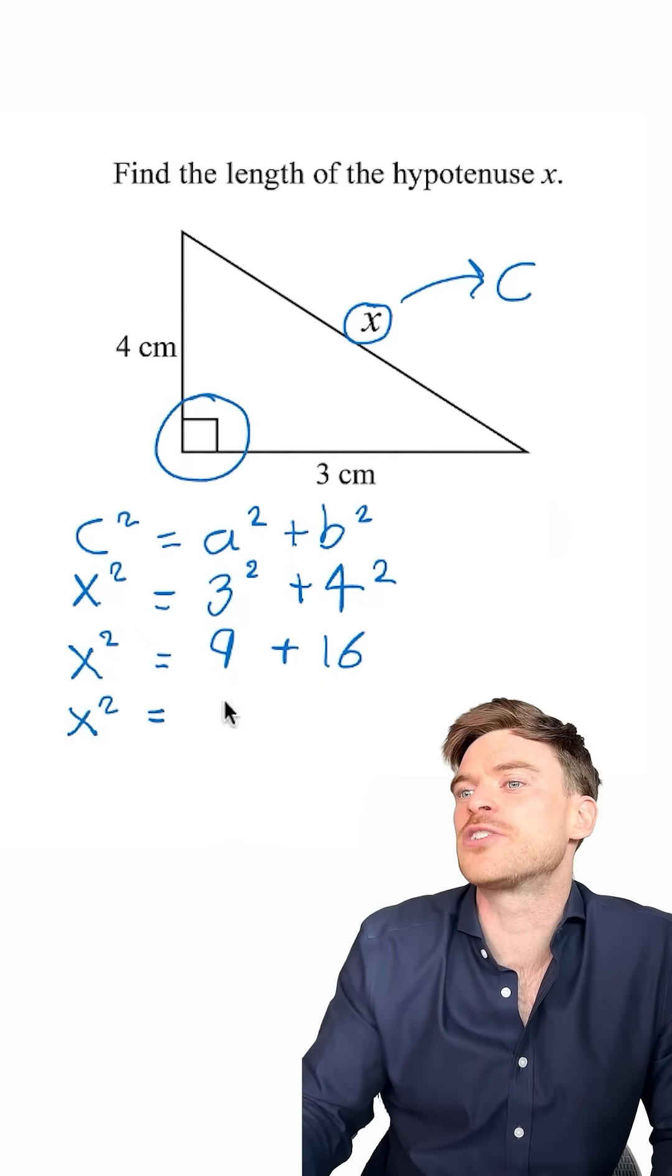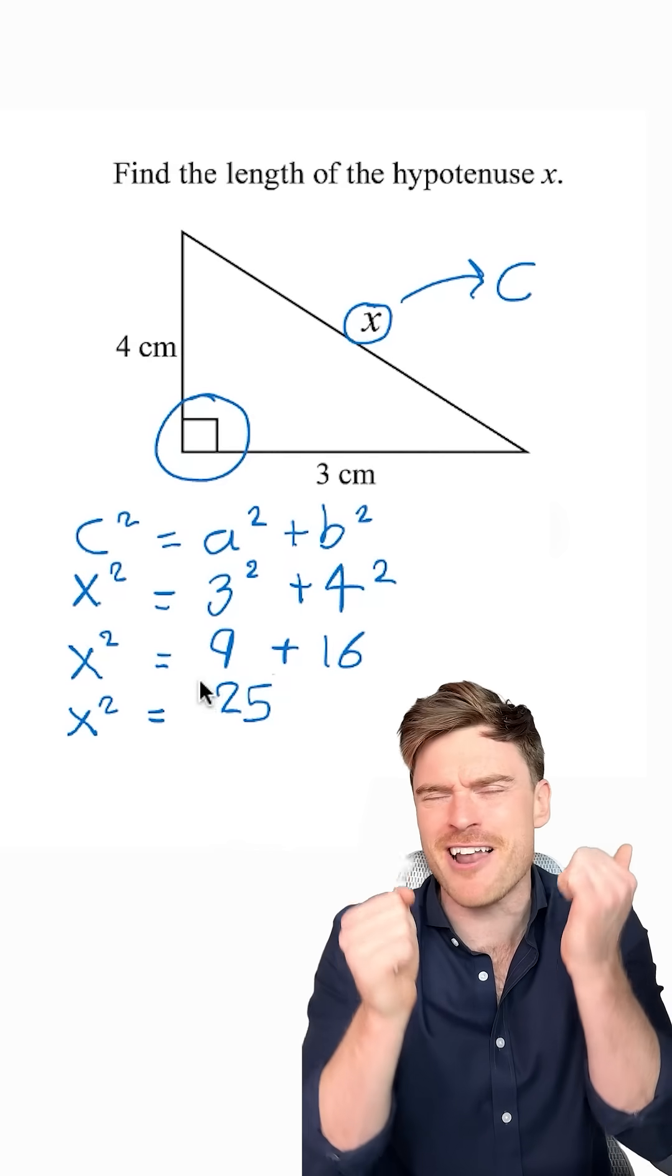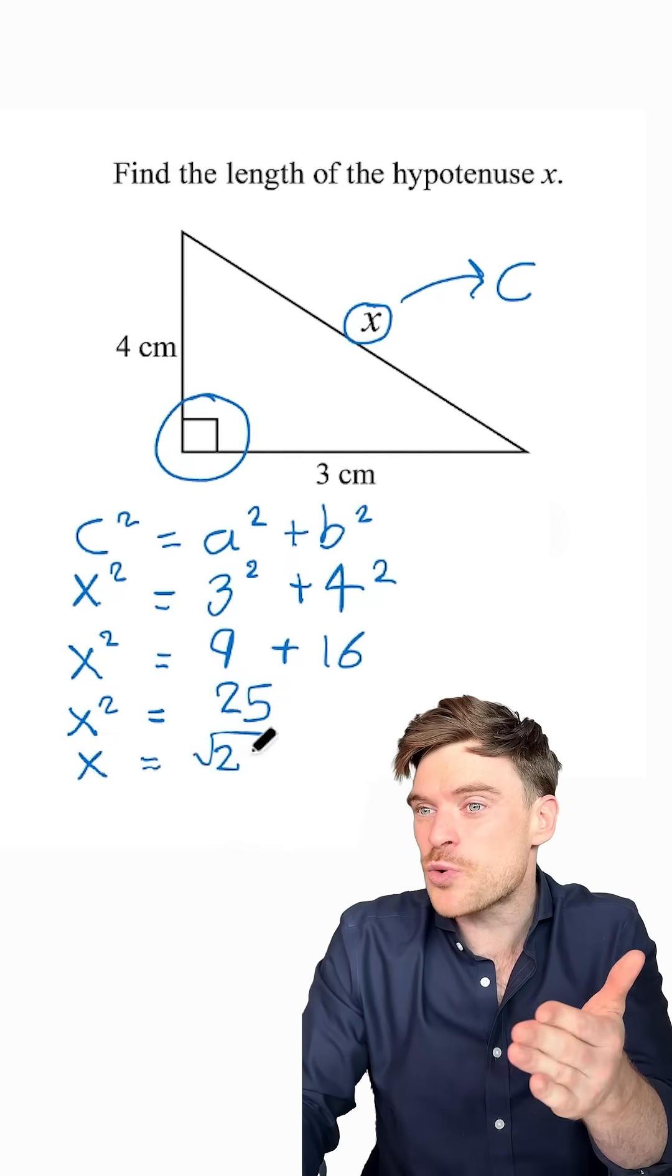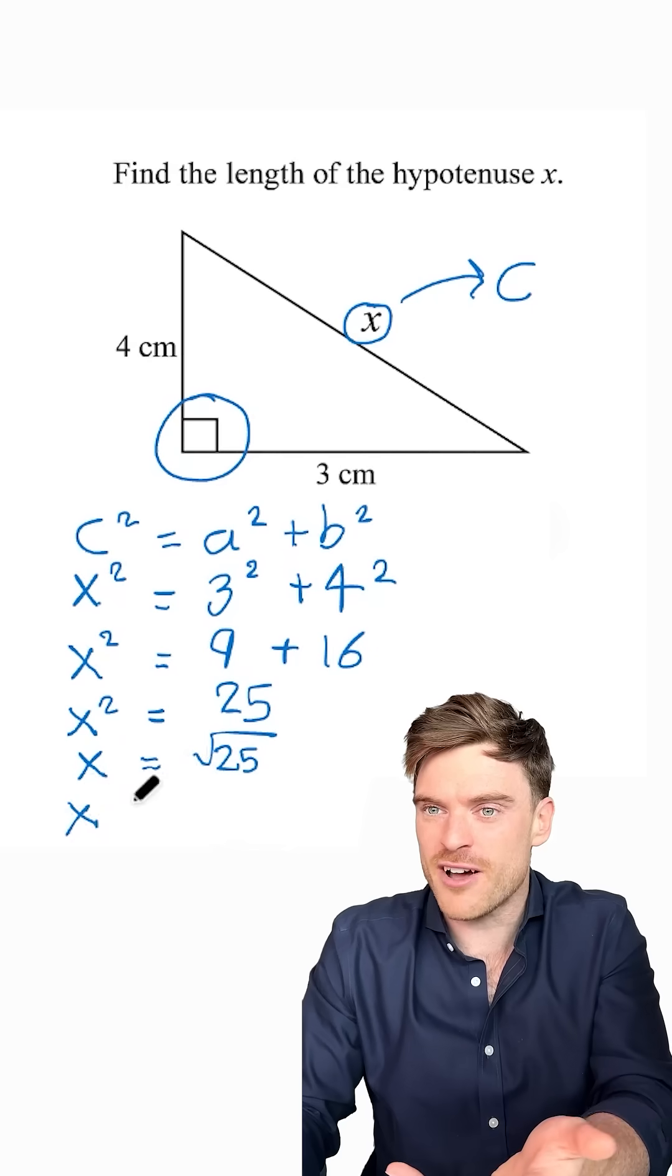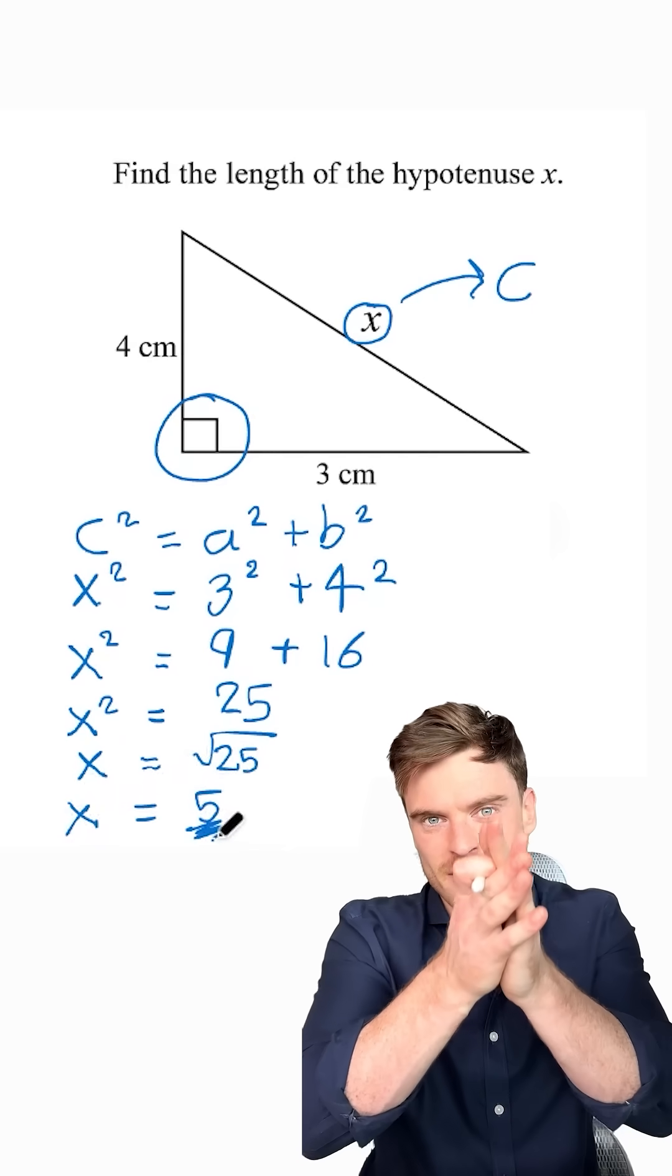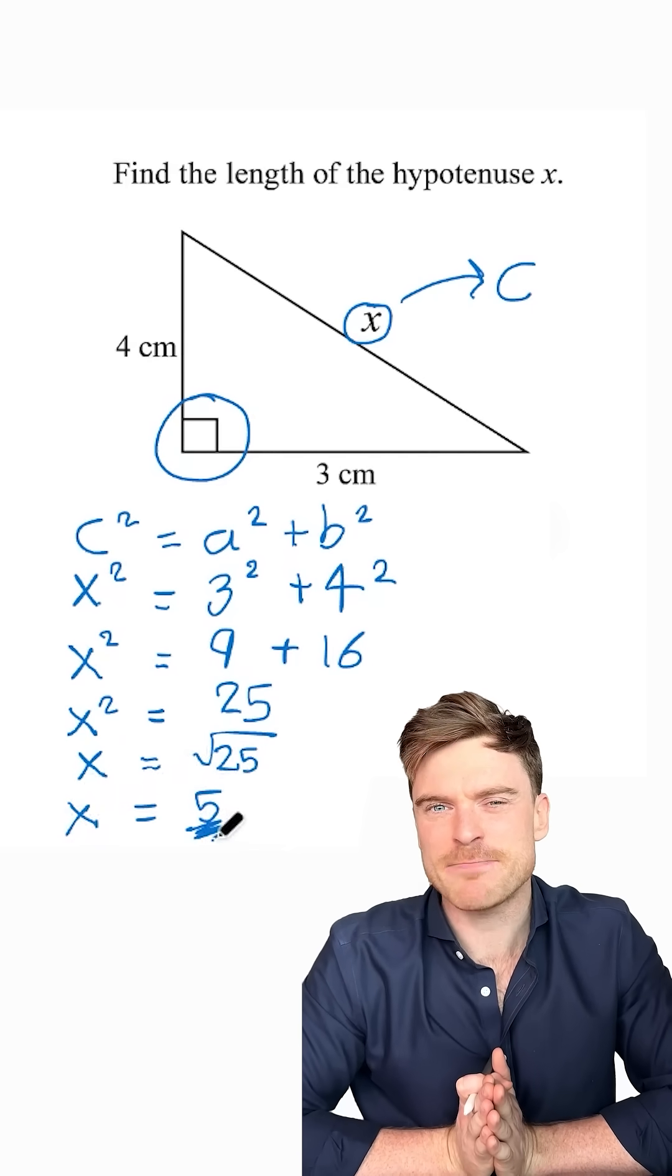So X squared is equal to 25. Now, the last part is crucial and people get lost here. X is equal to the square root of 25. X is equal to 5. Finish it off nicely. And that is Pythagoras' theorem.